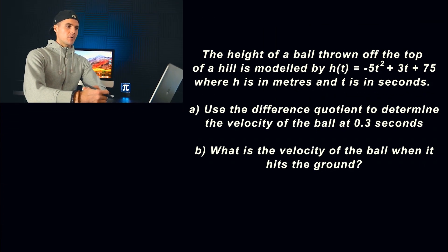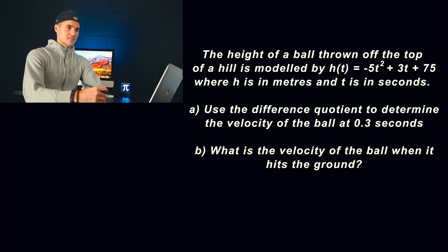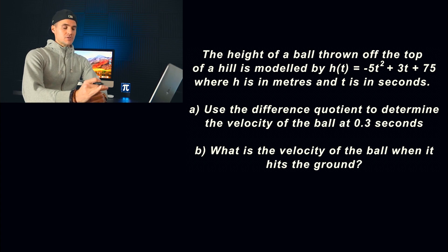We're told that a ball is thrown off a hill and its path is modeled by this function: h of t equals negative 5t squared plus 3t plus 75. There are two parts: we have to find the velocity of the ball at 0.3 seconds, and then find the velocity of the ball when it hits the ground.